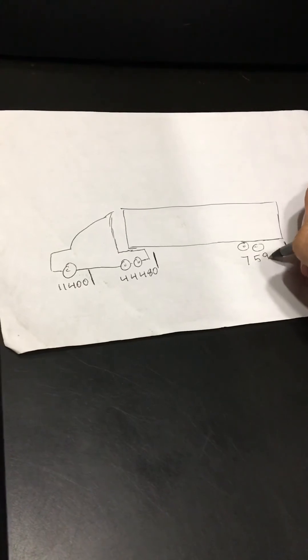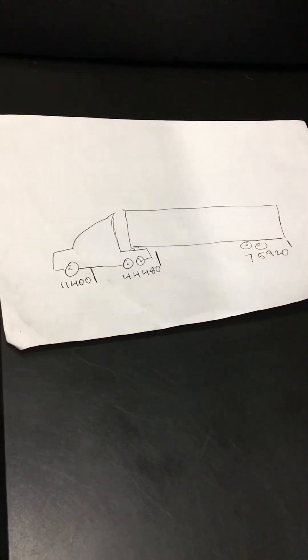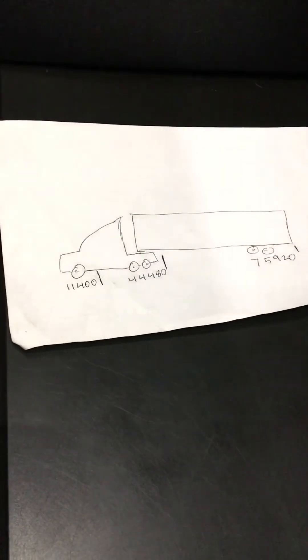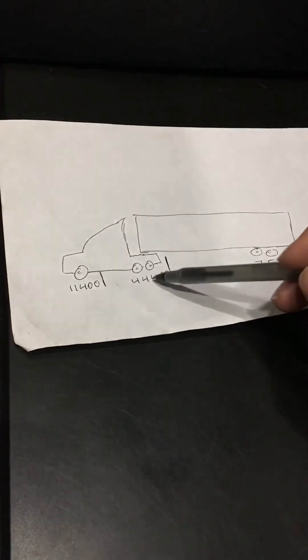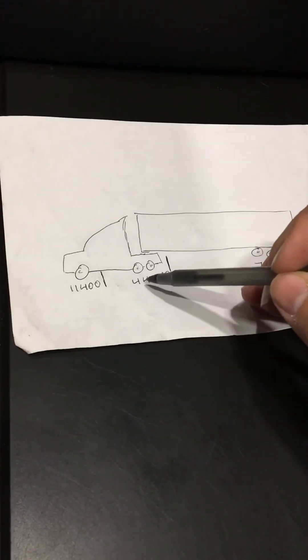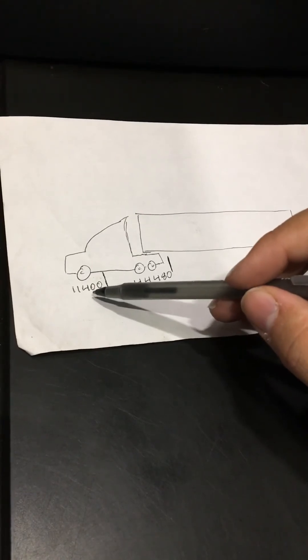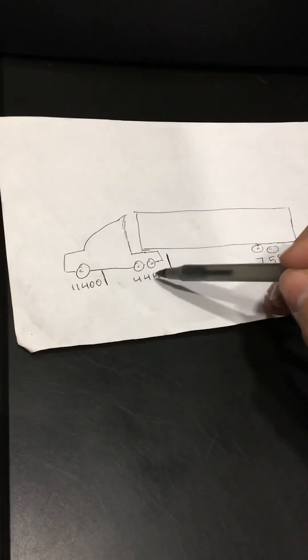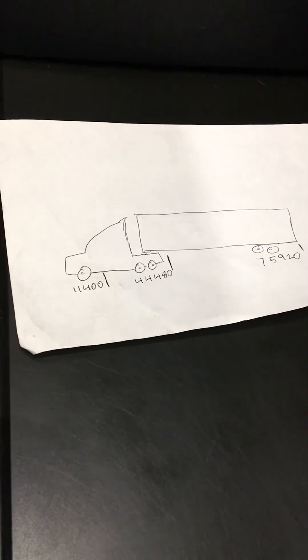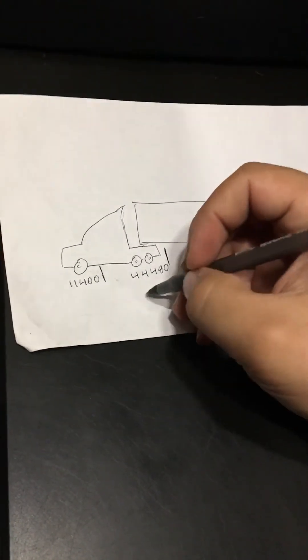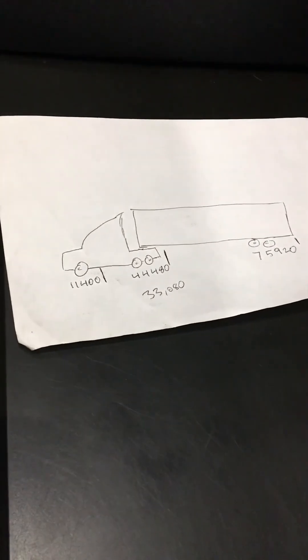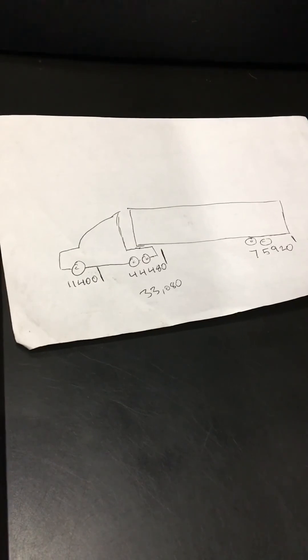Now how do you tell what weighs what here? Obviously this one is 11,400. To get your drive axle, all you have to do is subtract 11,400 from 44,480. That gave me a drive axle weight of 33,080 pounds. That's what that did for me.